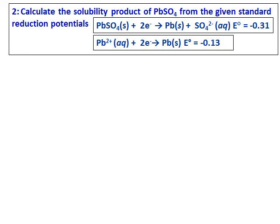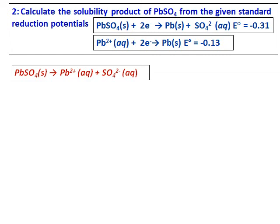Calculate the solubility product of PbSO4 from the given standard reduction potentials. Two equations are given: PbSO4 giving Pb solid and sulfate ion, and Pb2+ ions giving Pb solid, with E0 values provided for both. To find the solubility product, we need the equilibrium: PbSO4 solid → Pb2+ plus SO4²⁻. We need the K for this equation, and since K is related to E cell, if we can find E for this reaction, we can calculate K.